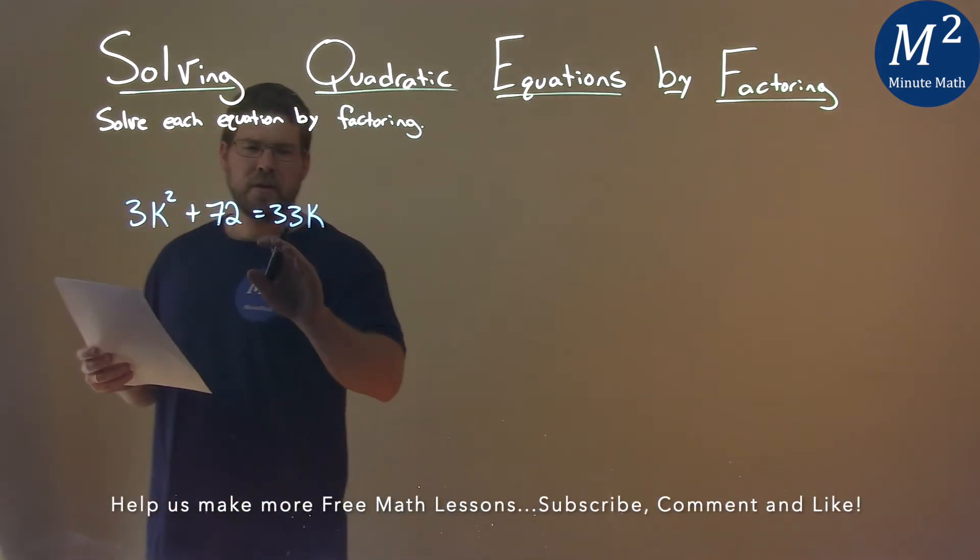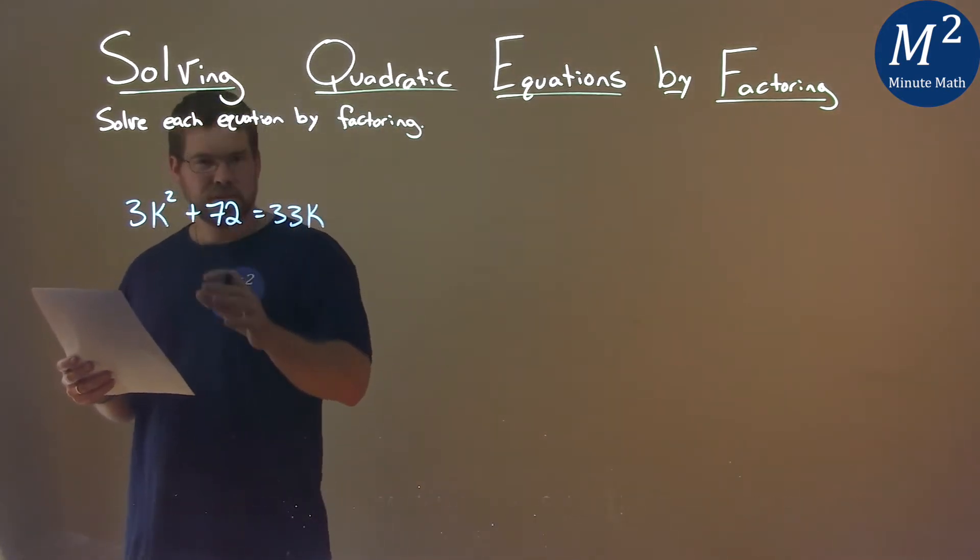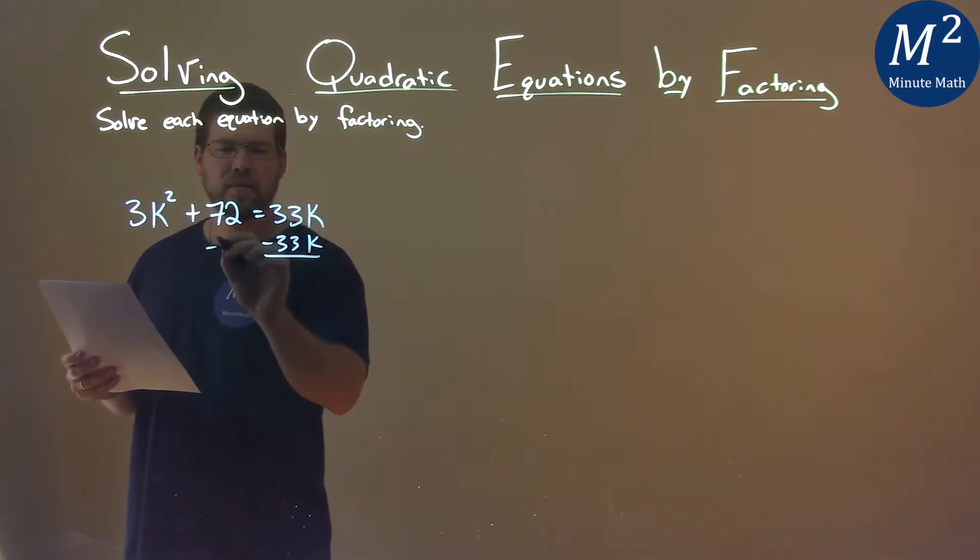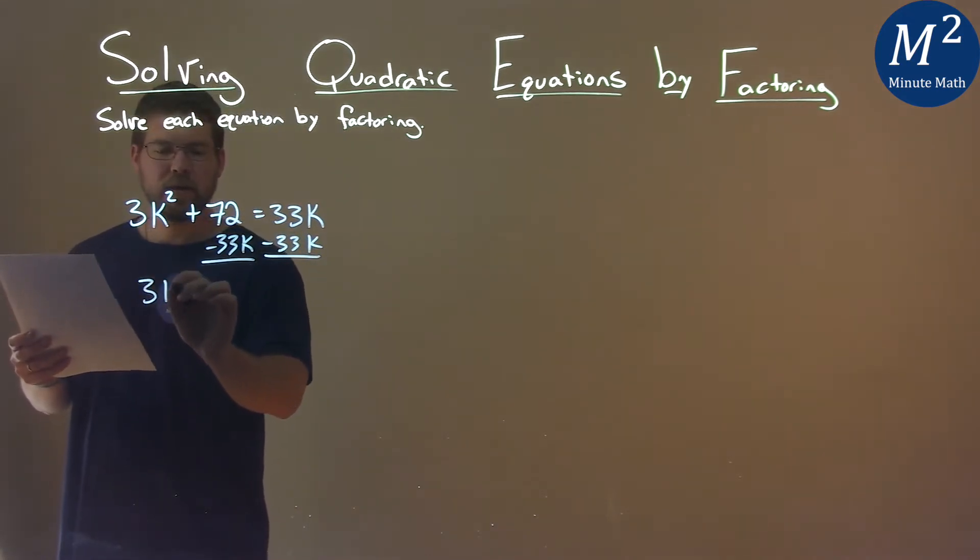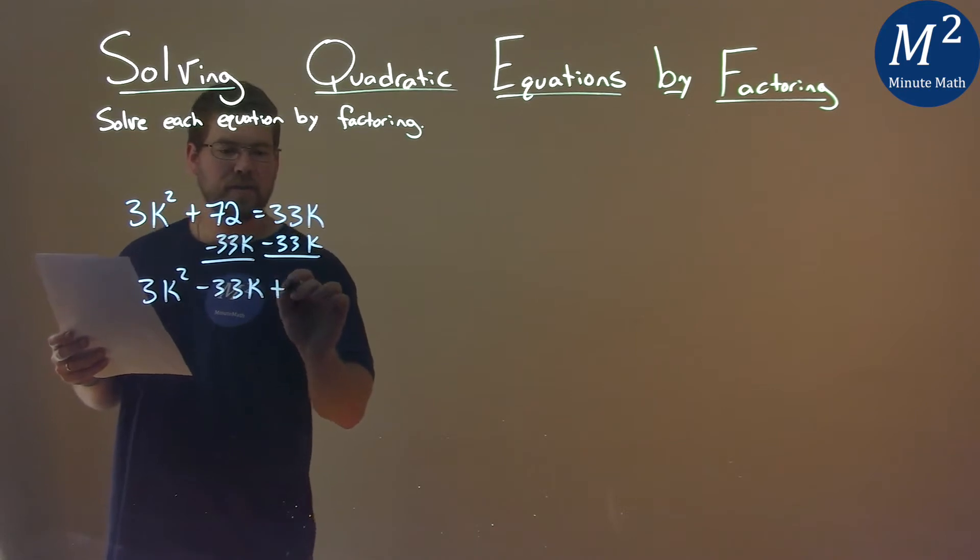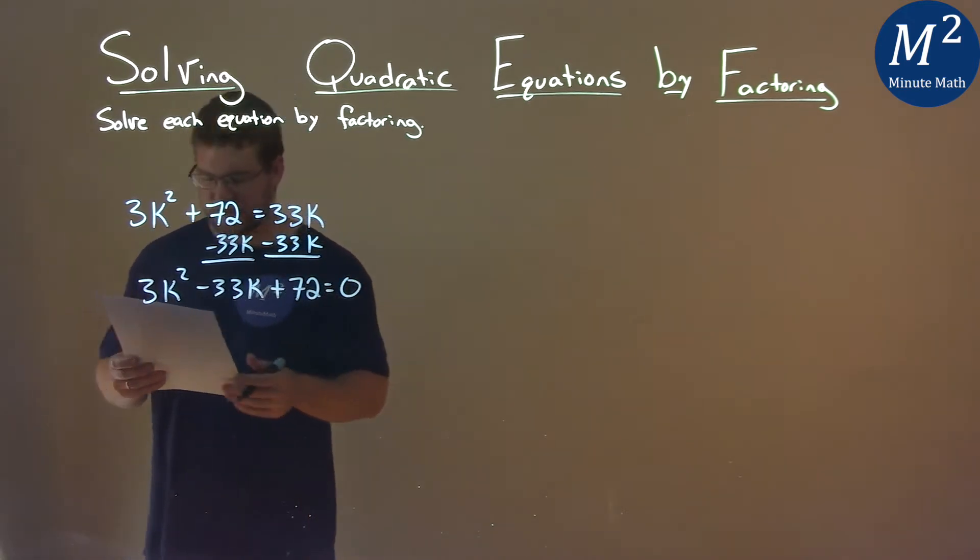Well, first thing I want to do is get this equation equal to zero. So I'm going to subtract 33k from both sides. We're left with then 3k squared minus 33k plus 72, and that's equal to zero.